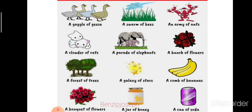More examples: a gaggle of geese, a swam of bees, an army of ants, a clowder of cat, a pride of elephants, a bunch of flowers, a forest of trees, a galaxy of stars, a combo of bananas, a jar of honey, a can of soda.